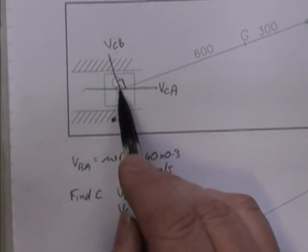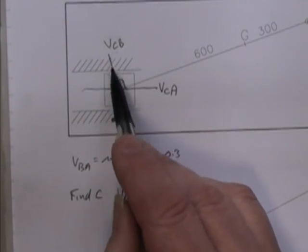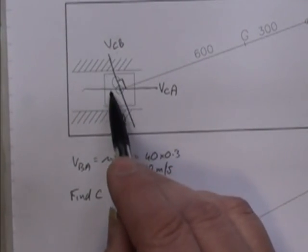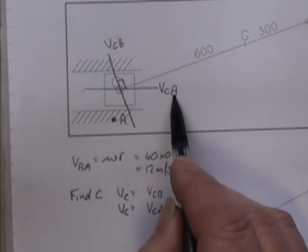Again, I drew my velocity at C. So therefore, it's VC relative to something. I drew it at C, VC relative to something.